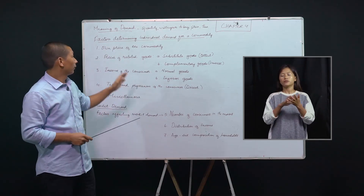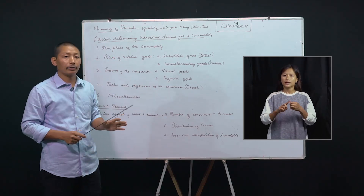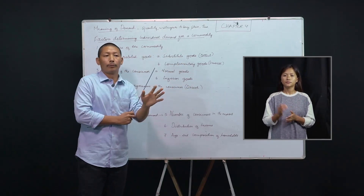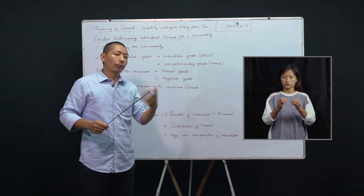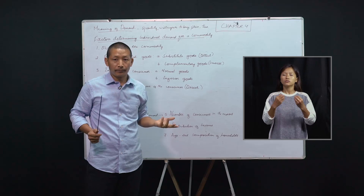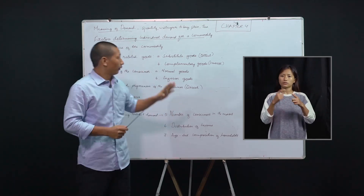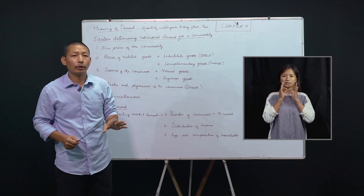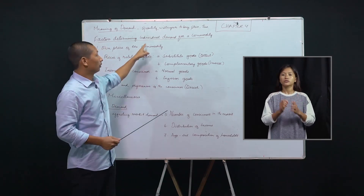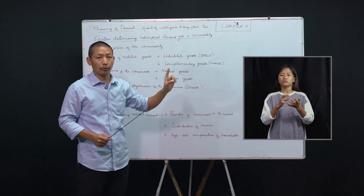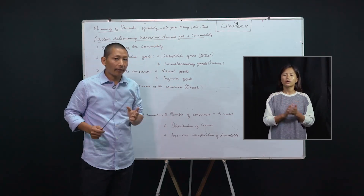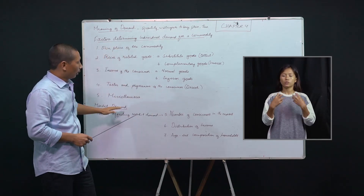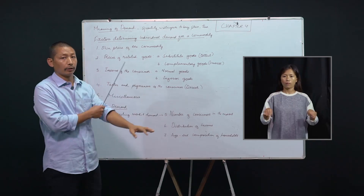Now, I want us to explain the factors affecting or factors determining individual demand for a commodity. There are many buyers out there in the market whose demand is affected by so many factors. But for making things simple, we are emphasizing only on a particular consumer — an individual consumer — and what are the factors which affect his demand for goods. These are the factors written on the board; we will explain one after the other.